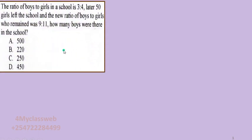This question had been posted earlier and some viewers who had been trying to answer it have requested the solution. I want to take this chance to explain how you could have approached this problem. We are told that the ratio of boys to girls in a school is 3:4. Later, 50 girls left the school and the new ratio of boys to girls who remained was 9:11. How many boys were there in the school?